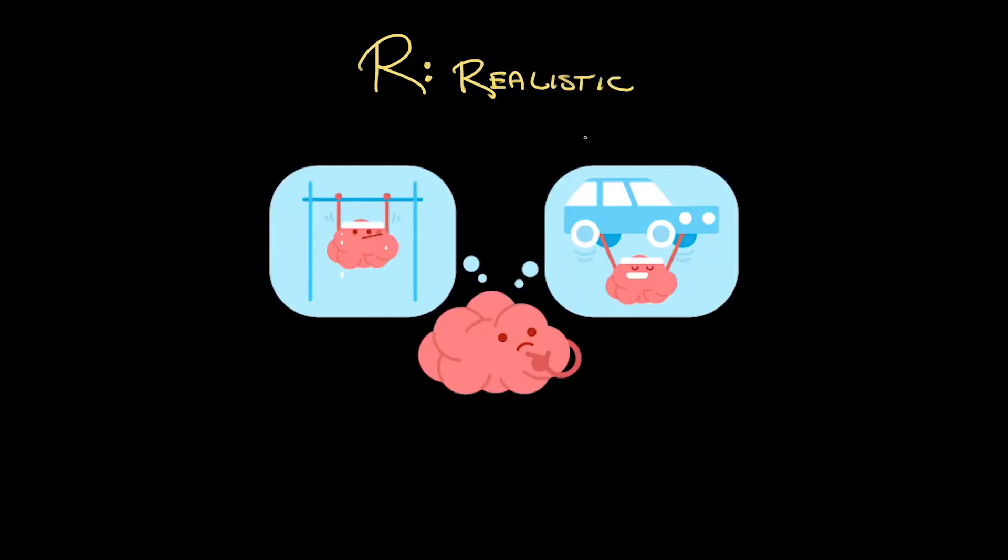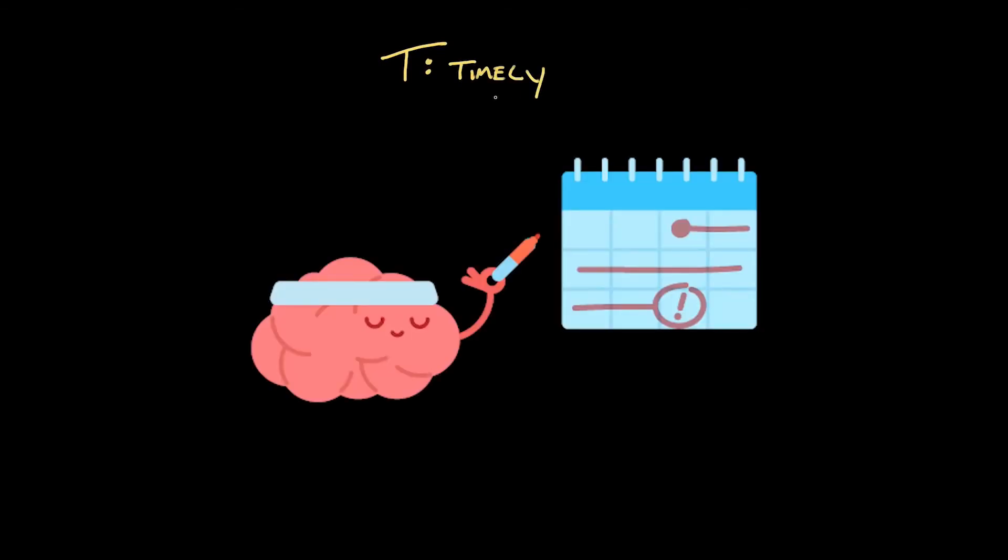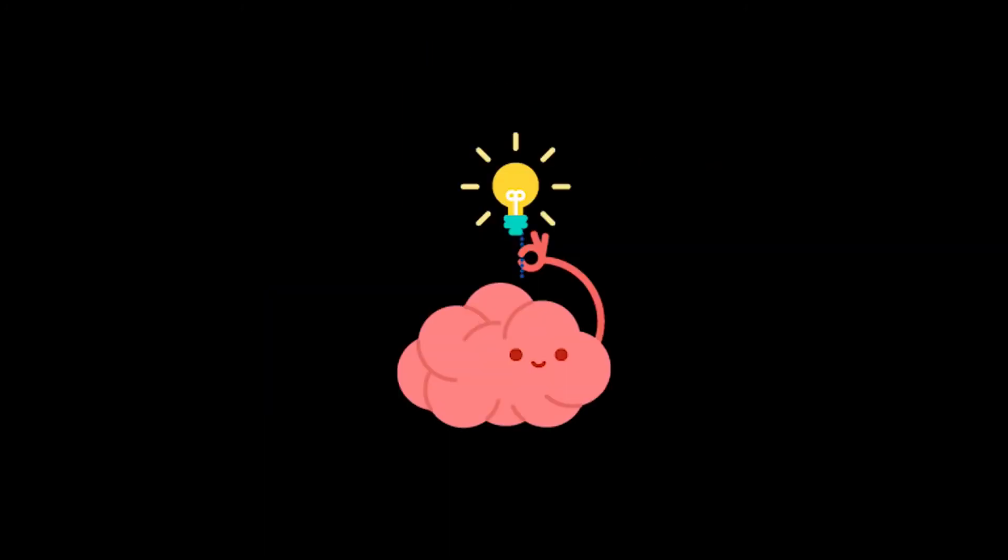R is for realistic. TP's not training to lift a car. Just some pull-ups. T is for timely. There's a time limit on this. Thinky Pinky wants to do this in a year's time. All together, that's a smart goal you got there, TP.